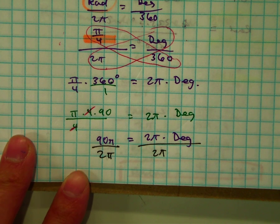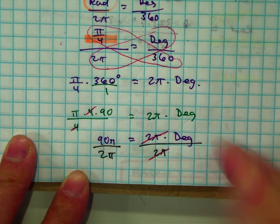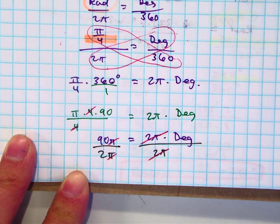What happens? 2π divided by 2π is 1. Also over here. And 90 divided by 2 is?